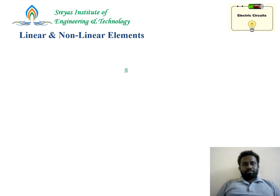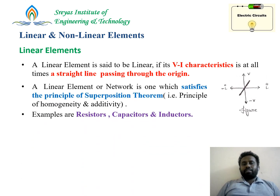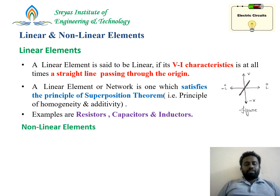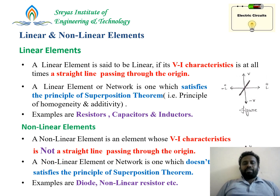Linear elements are those which obey the superposition principle, or whose V-I characteristics are a straight line passing through the origin. They satisfy the principle of homogeneity and additivity. Examples are resistor, capacitor, and inductor. Non-linear elements are those which do not obey the superposition principle, or whose V-I characteristics are not a straight line through the origin. Examples include diode and non-linear resistors.